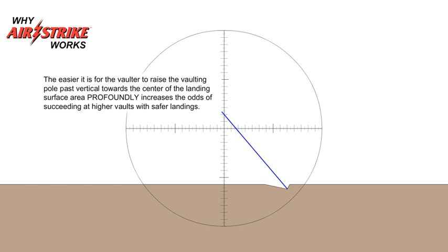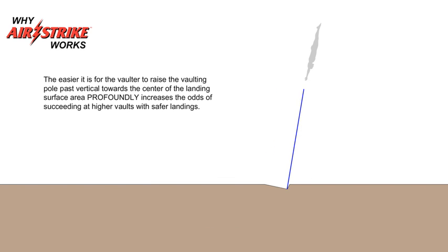The easier it is for the vaulter to raise the vaulting pole past vertical towards the center of the landing surface area profoundly increases the odds of succeeding at higher vaults with safer landings.